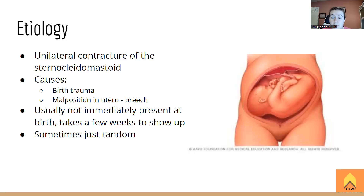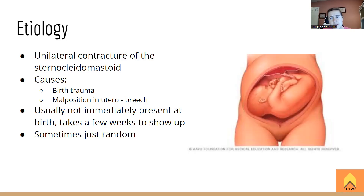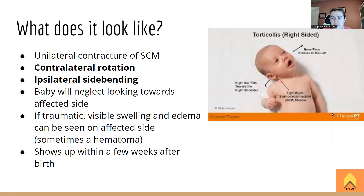The boards also talks about Erb's palsy, which is a stretching of the brachial plexus — so Erb's palsy is a nerve injury, while torticollis is a musculoskeletal injury. Because of this, torticollis takes a few weeks to show up. The baby will look normal after a traumatic birth and then slowly start getting into that contractured position. They might not come in until they're a couple months old. And sometimes it's just random — nothing really crazy happened and the baby just has torticollis.